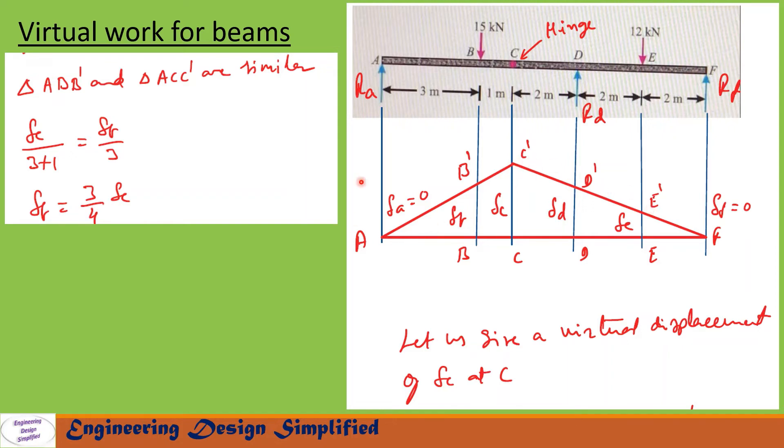Here we have two similar triangles: ABB' and ACC'. From these two triangles, we can write ΔC/(3+1) = ΔB/3. From this equation, we can write ΔB = (3/4)ΔC. Here ΔA = 0, ΔF = 0. Here it is ΔB, ΔC, ΔD, and ΔE.